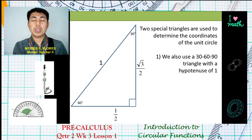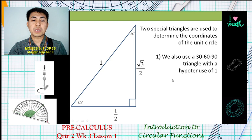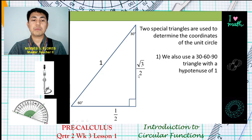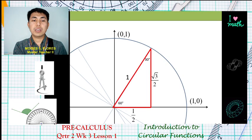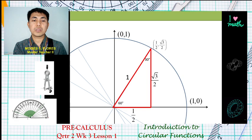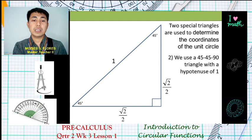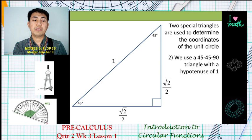In the 30-60-90 triangle, we have 1 unit for the hypotenuse. For the 30-degree angle, the adjacent side is 1/2, and the side opposite the 60-degree angle is √3/2. So our coordinates are (1/2, √3/2). The other special triangle is the 45-45-90 triangle.